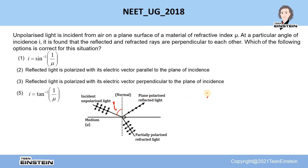And this particular angle of incidence is called Brewster's angle that we know. So this is called Brewster's angle.